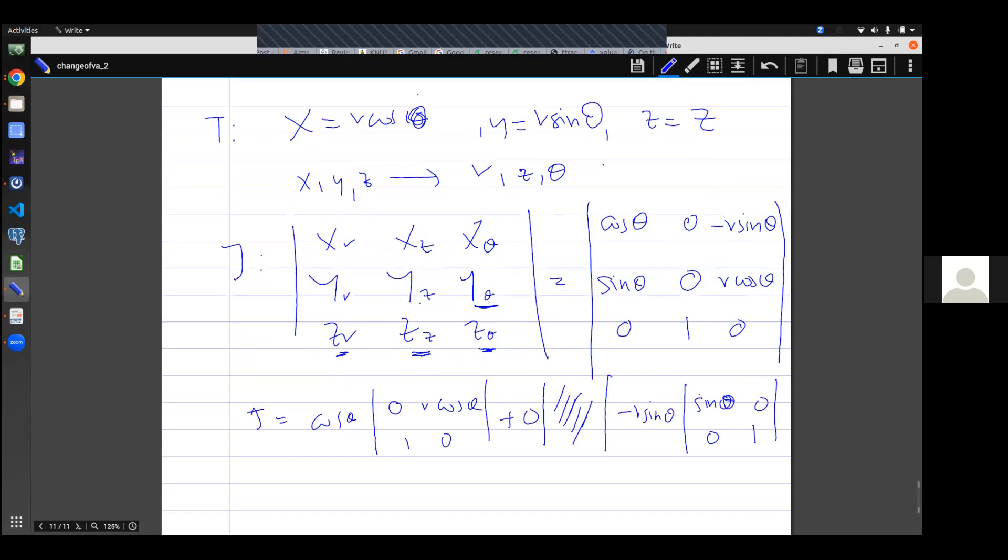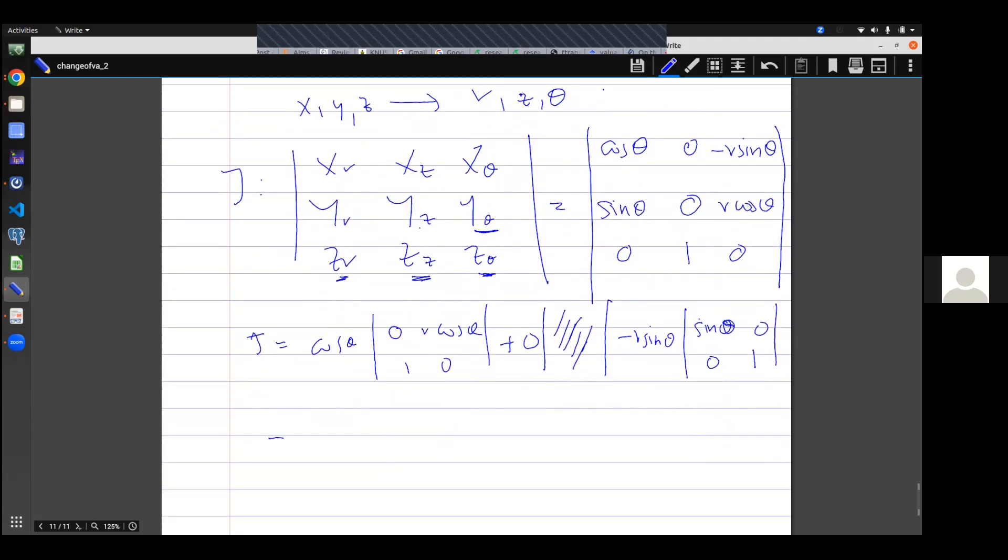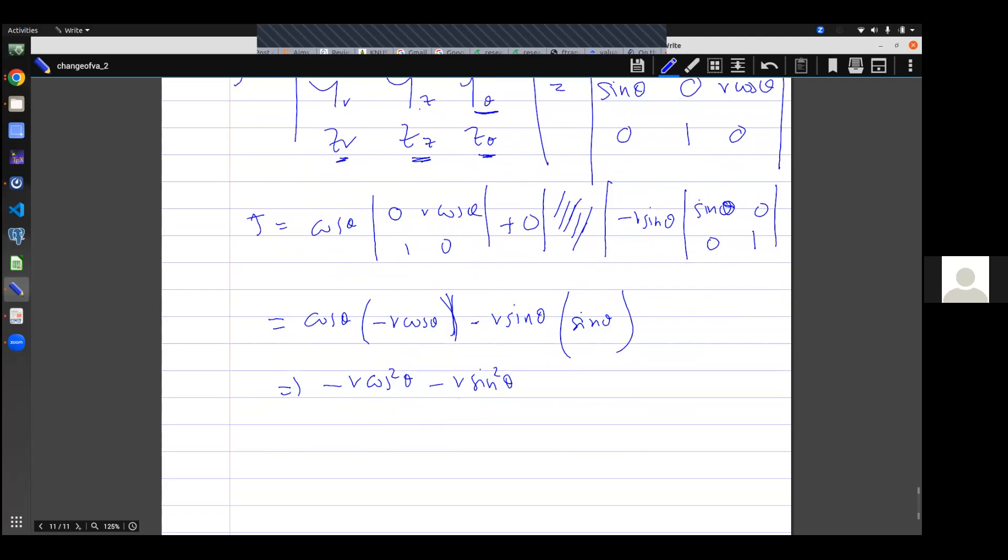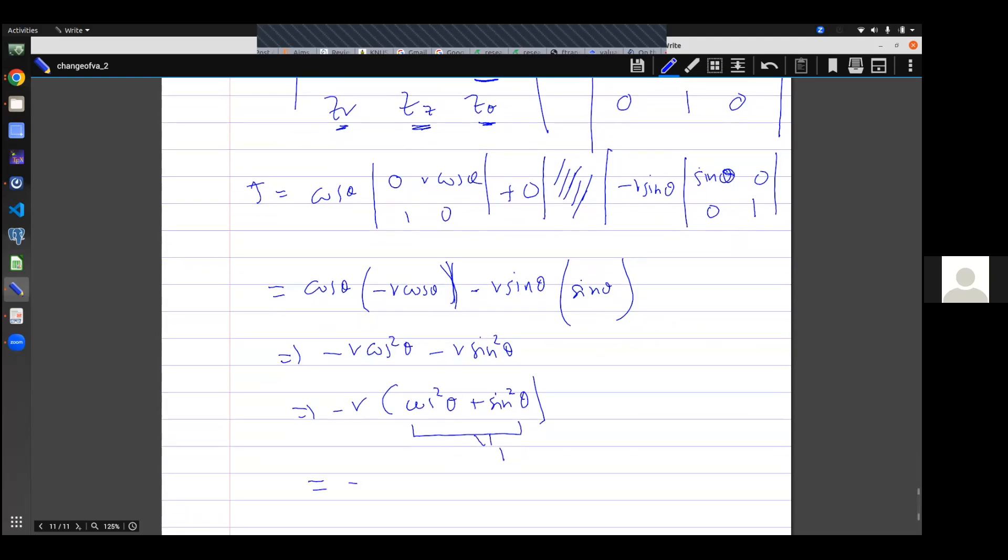If I take zero, I don't really care what I have in between this, because it will still give me zero minus r sine theta times sine theta times one. If I simplify further, I'm going to get cos theta here times negative r cos theta minus r sine theta here times sine theta. If I simplify further again, I'm going to get negative r cos squared theta minus r sine squared theta. I can just factorize r out, or negative r out, and I'll get cos squared theta plus sine squared theta. And the trigonometry identity is equal to one. It means my Jacobian is negative r.